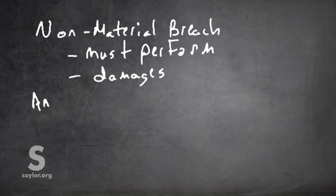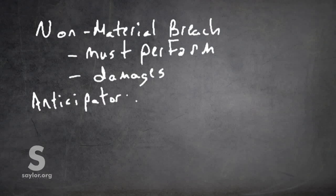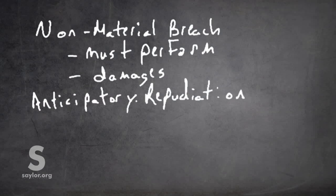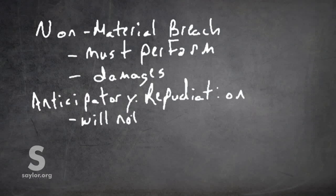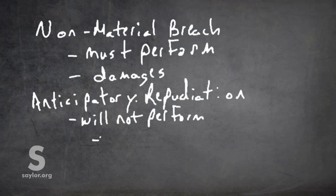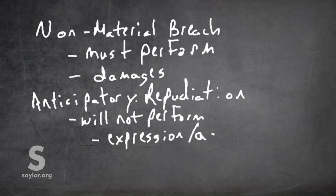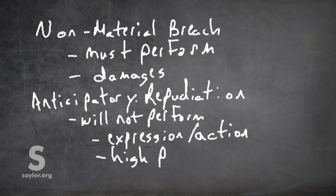Let's take a look at another kind of breach known as anticipatory repudiation or anticipatory breach. This is when a party to a contract makes it clear that their intent is that they will not perform their obligations under the contract. And it can't just be kind of a guess. There has to be an expression or action that pretty clearly establishes that there's a high probability the breach will occur.